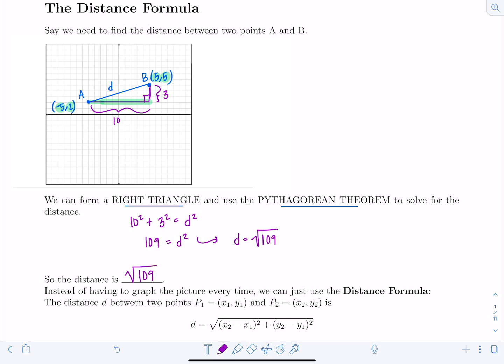Now instead of having to graph the picture every time, we can just use the distance formula. So let's generalize on the process that we just did. Because what if you had coordinates with really crazy values that were not going to be convenient to draw? Right, what if A had coordinates negative 147.2? I'm not going to draw that.